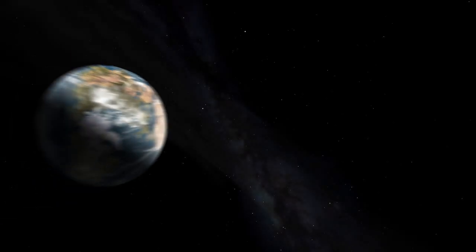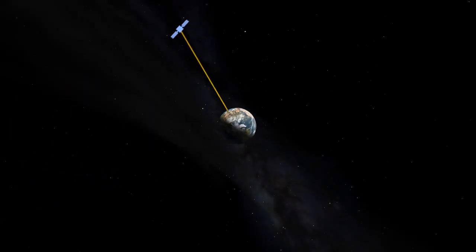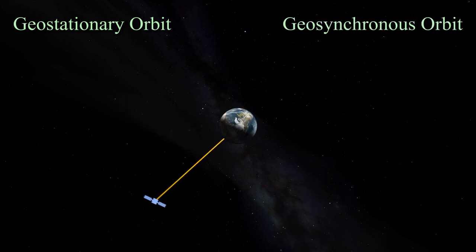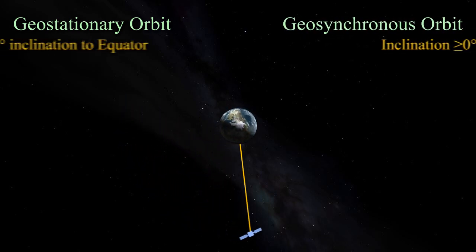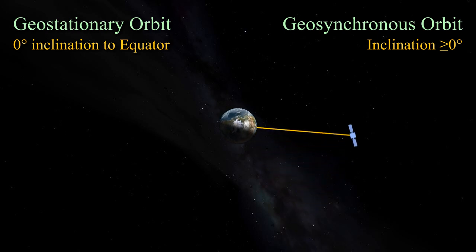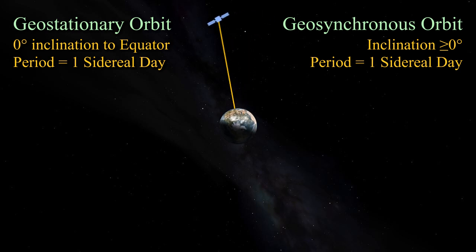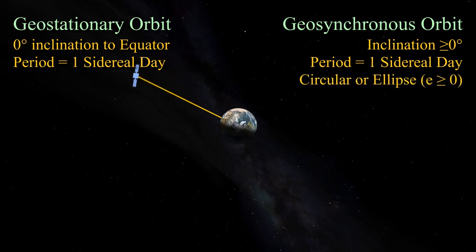A common question is how geocentrism can explain a geostationary orbit. The special case of geosynchronous orbit where a satellite is situated above the equator, and appears motionless. Both have an orbital period of one sidereal day. Geosynchronous orbits however need not be circular, whereas geostationary orbits must be.